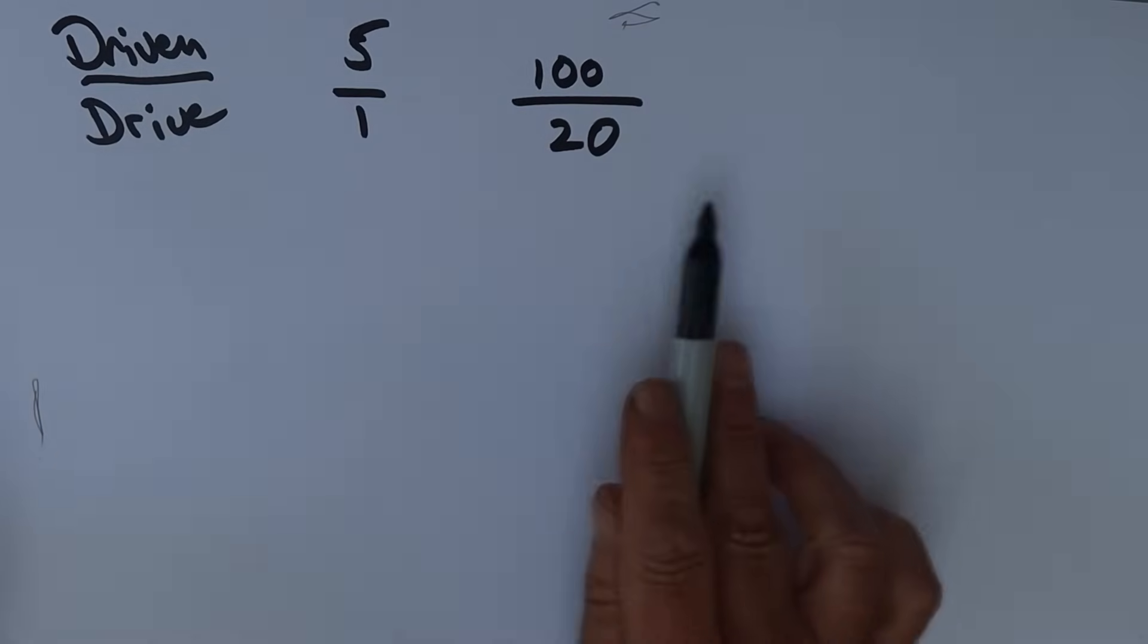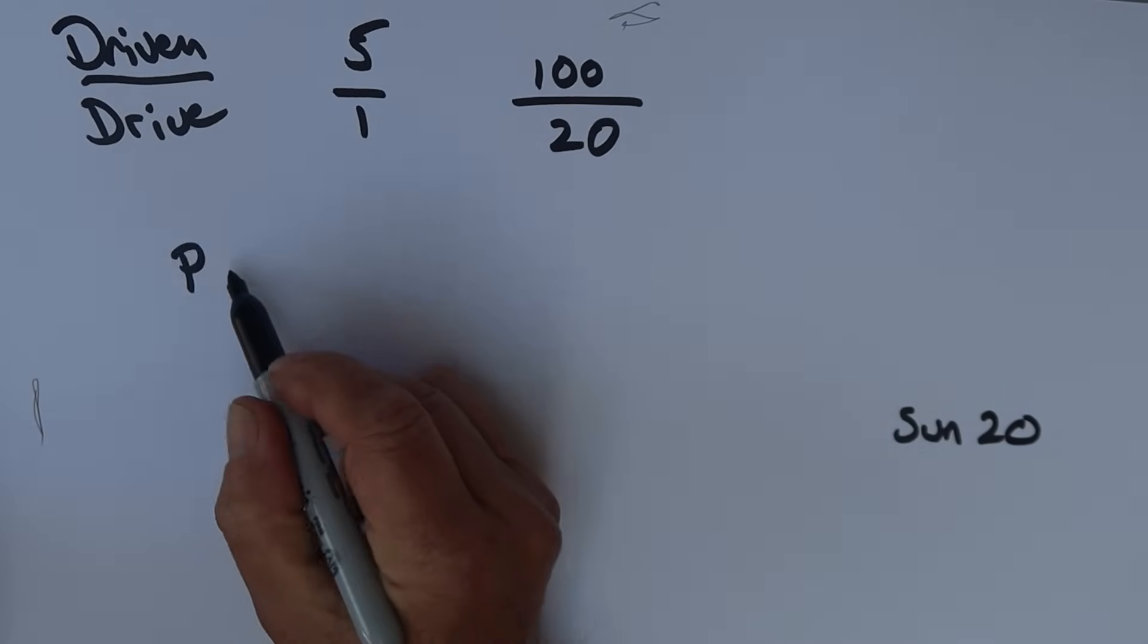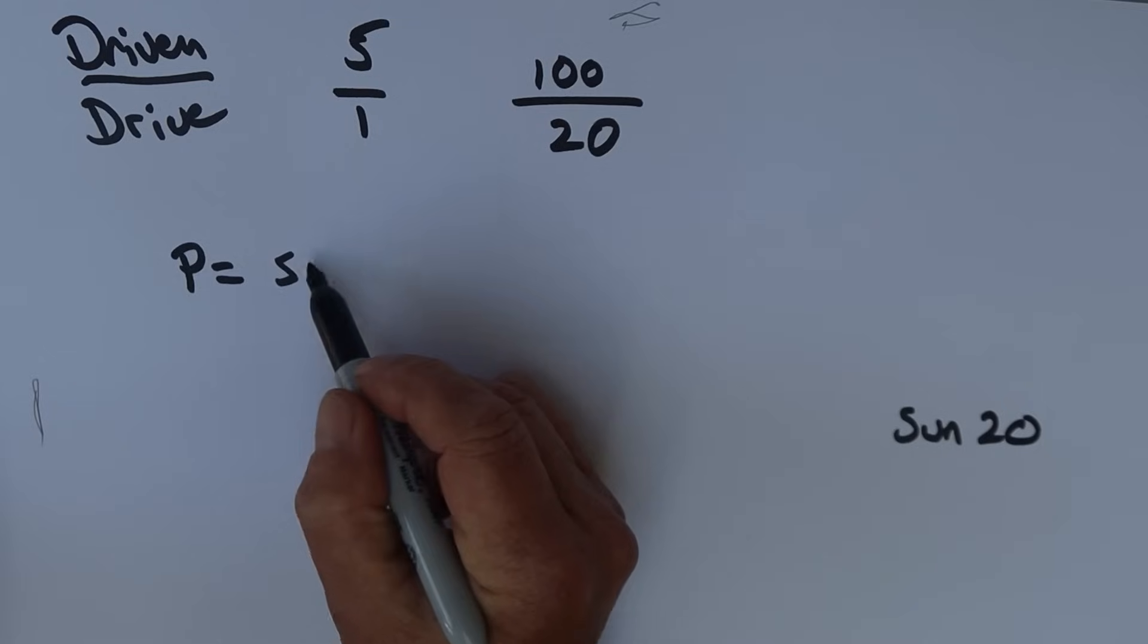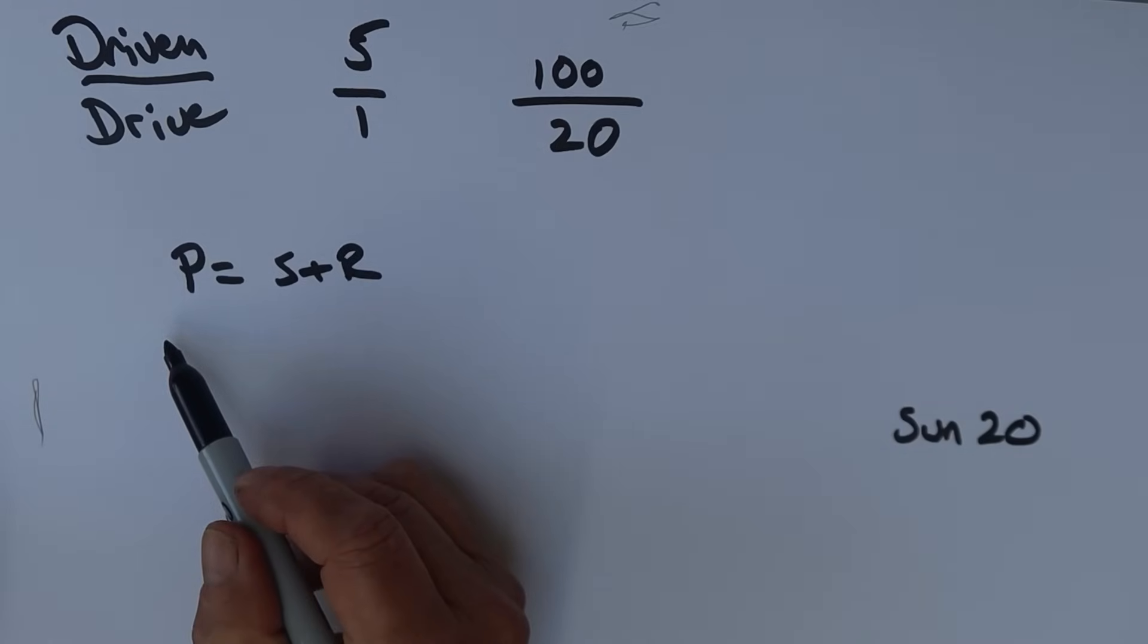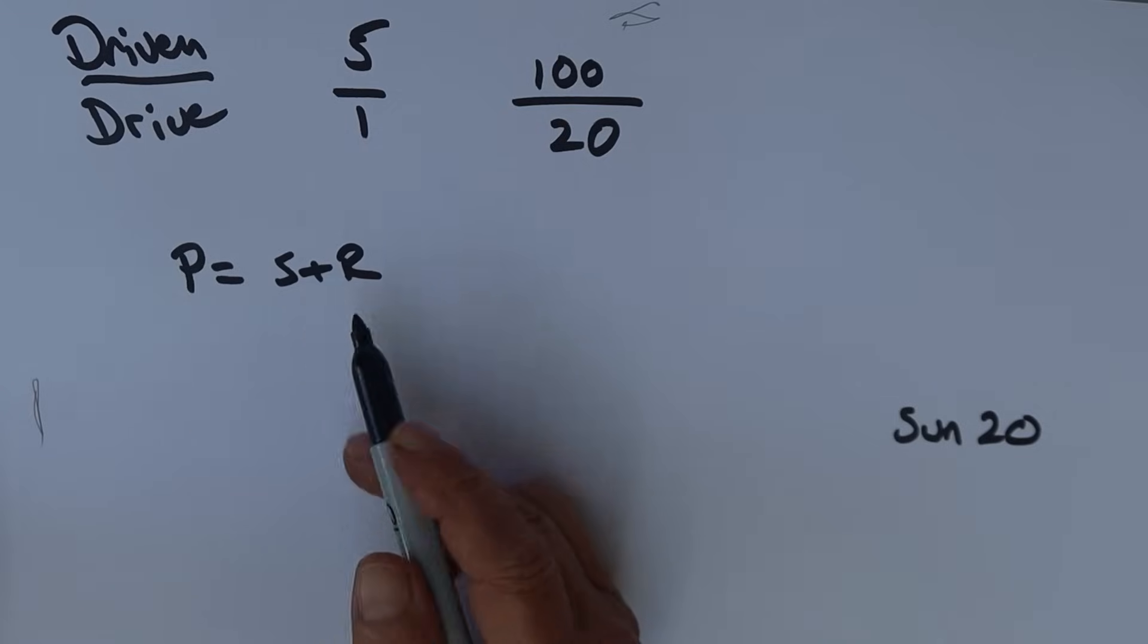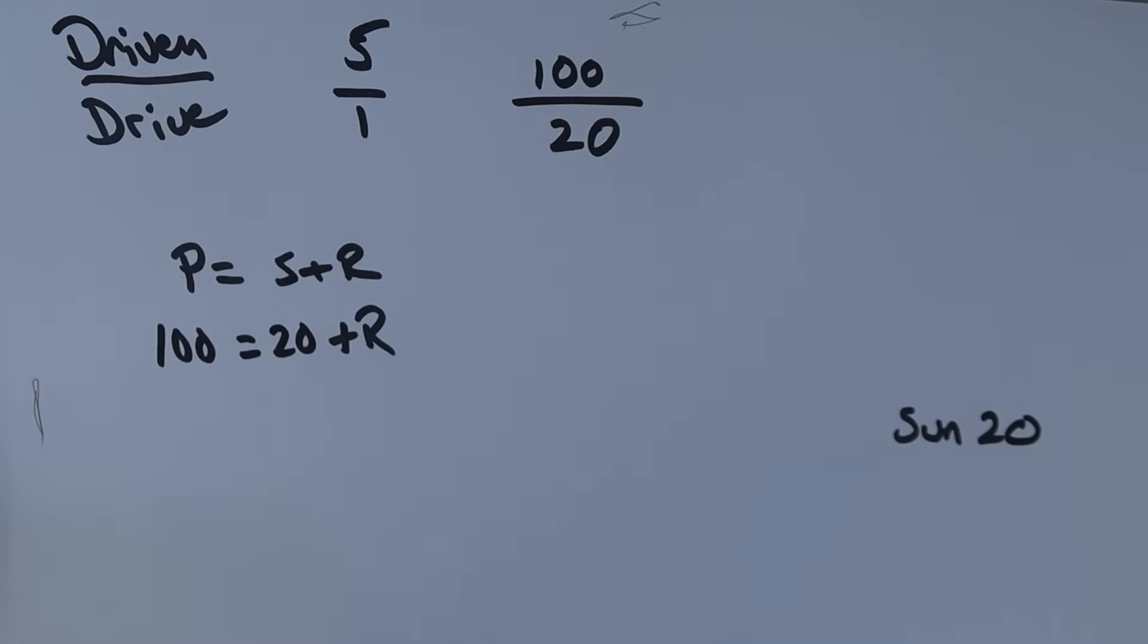That means my drive, which is going to be my sun, has to have a tooth size of 20. And so my sun will be 20. This bit, the driven, the planets, remember, the planet isn't a gear ratio. It's an apparent ratio, where the planet gear ratio is equal to the sun plus the ring. We know that we want the planets to be 100. We've got 20 for the sun already. So 100 needs to be 20 plus whatever the ring tooth is. And clearly, that means that my ring is going to be 80.